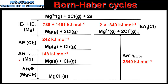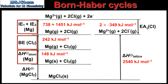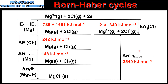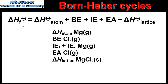Applying Hess's law, the enthalpy change of formation for Magnesium Chloride is equal to the atomization of Magnesium plus the bond energy of Chlorine plus the first and second ionization energies of Magnesium plus 2 times the electron affinity of Chlorine minus the lattice enthalpy for Magnesium Chloride. The reason we subtract the lattice enthalpy is because we are going against the arrow in the Born-Haber Cycle.